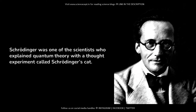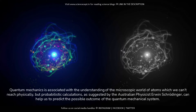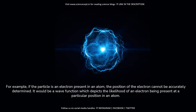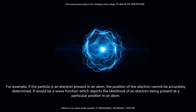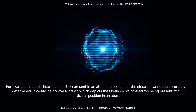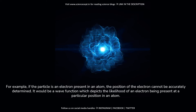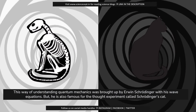Schrödinger was one of the scientists who explained quantum theory with a thought experiment called Schrödinger's Cat. Quantum mechanics is associated with the understanding of the microscopic world of atoms which we can't reach physically, but probabilistic calculations, as suggested by the physicist Erwin Schrödinger, can help us predict the possible outcome of a quantum mechanical system. For example, if the particle is an electron present in an atom, the position of the electron cannot be accurately determined. It would be a wave function which depicts the likelihood of an electron being present at a particular position in an atom. This way of understanding quantum mechanics was brought up by Erwin Schrödinger with his wave equations.